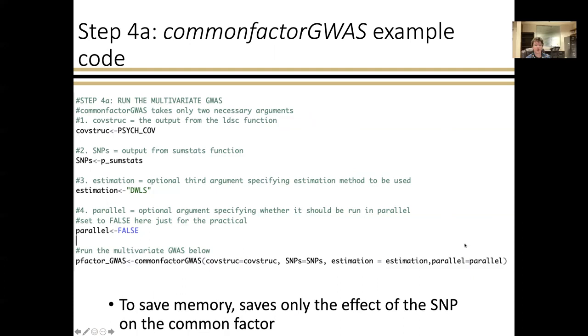I'm going to go over both the common factor GWAS and user GWAS functions starting with the common factor GWAS function. This takes two necessary arguments. The first is the output from LD score regression, and the second is the output from the sum stats function. And then finally, once again, you can specify DWLS or ML for the estimation method. And then you can also specify whether you want to run in parallel. So in practice, if you're running a GWAS that you cannot run on a laptop, unlike the models that we were showing in part one. So for this, you really will want to be running in parallel on a computing cluster, but for the purposes of this, because we're using a small subset of the SNPs, we're going to run not in parallel. So you get a sense of how these functions work.